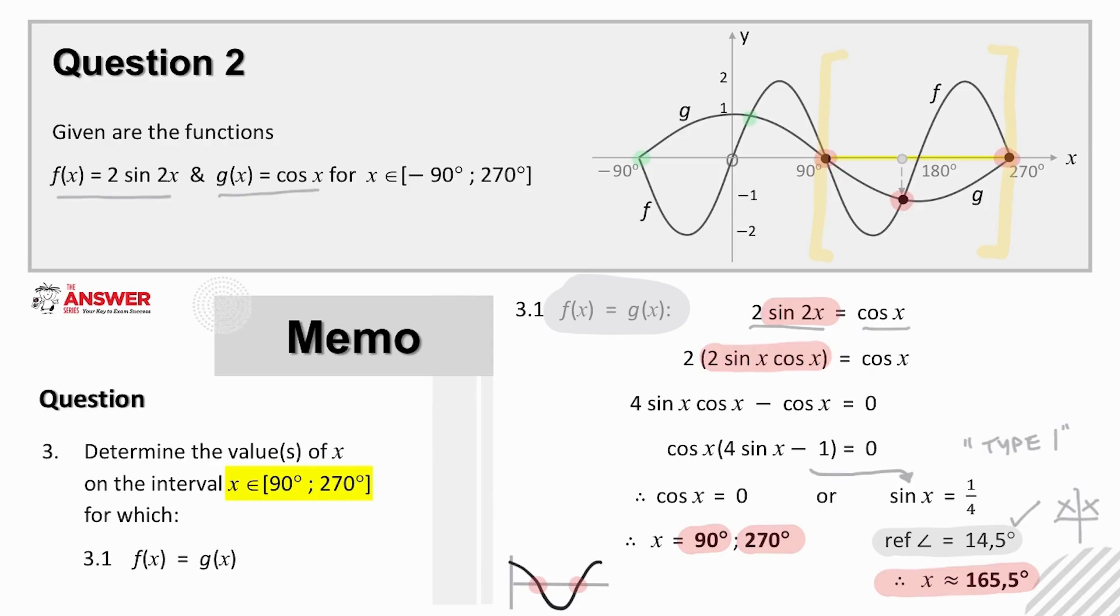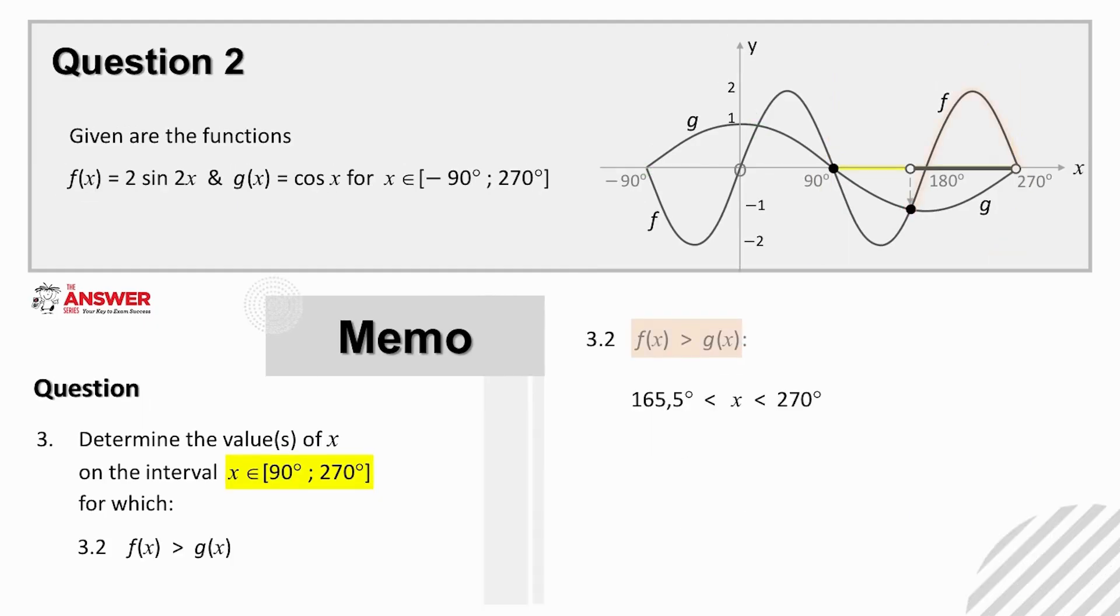Let's go on now to look at the solution for 3.2. It's the points of intersection that we have just found that now help us to answer this next part of the question, where they are asking us to determine the values of x for which f is greater than g on the interval 90 to 270 degrees.